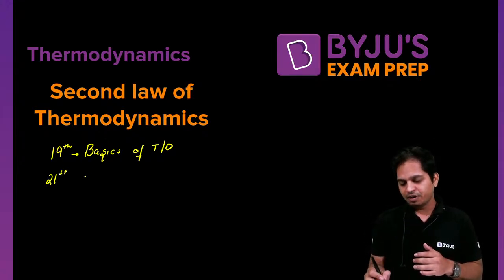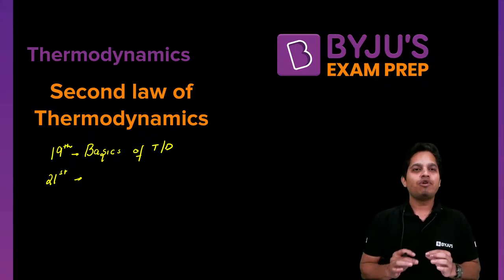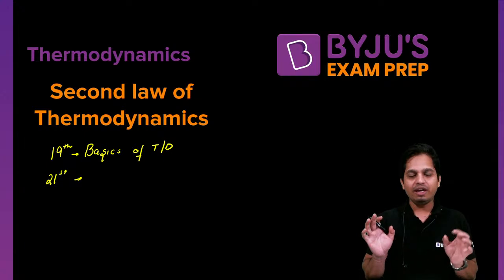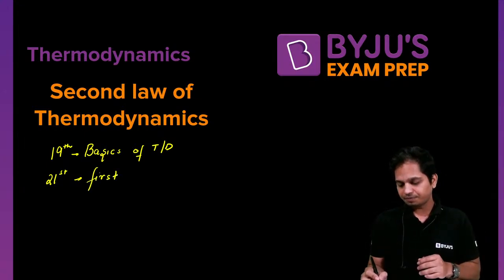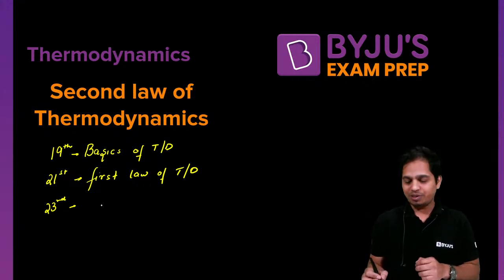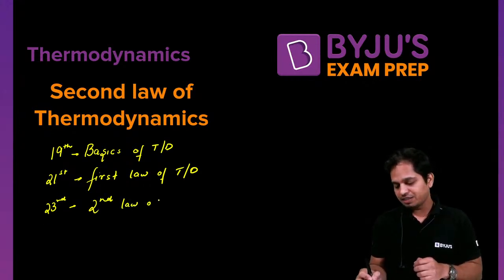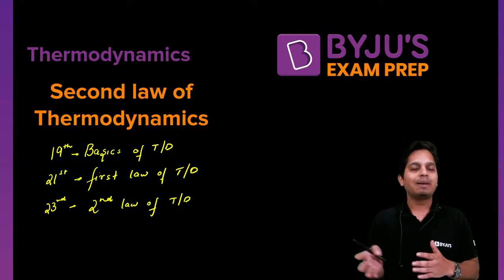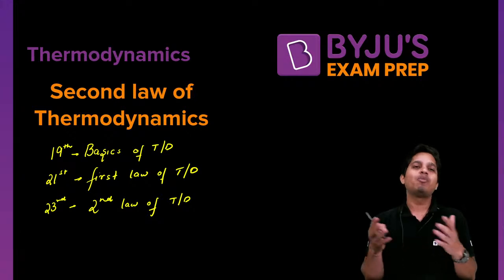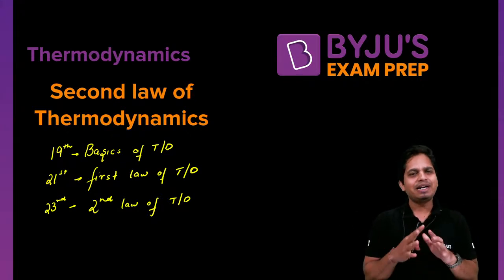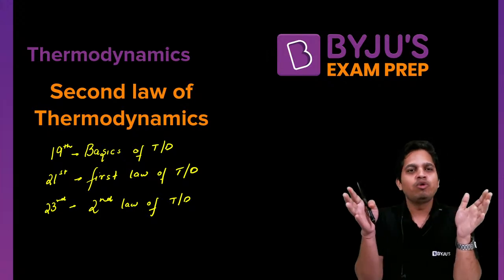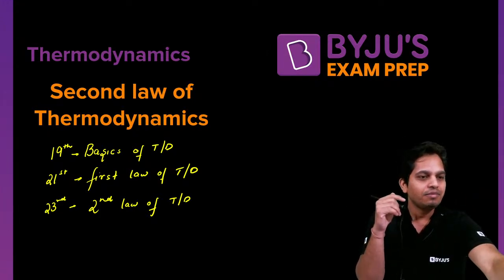Then on 21st of July, we covered the first law of thermodynamics — closed system, open system with steady flow and unsteady flow. And today, on 23rd of July, we have come to the final session with the second law of thermodynamics, where we are going to see the two statements, the entropy concept, and some numericals. These will be very small questions. Let's start this session very quickly.